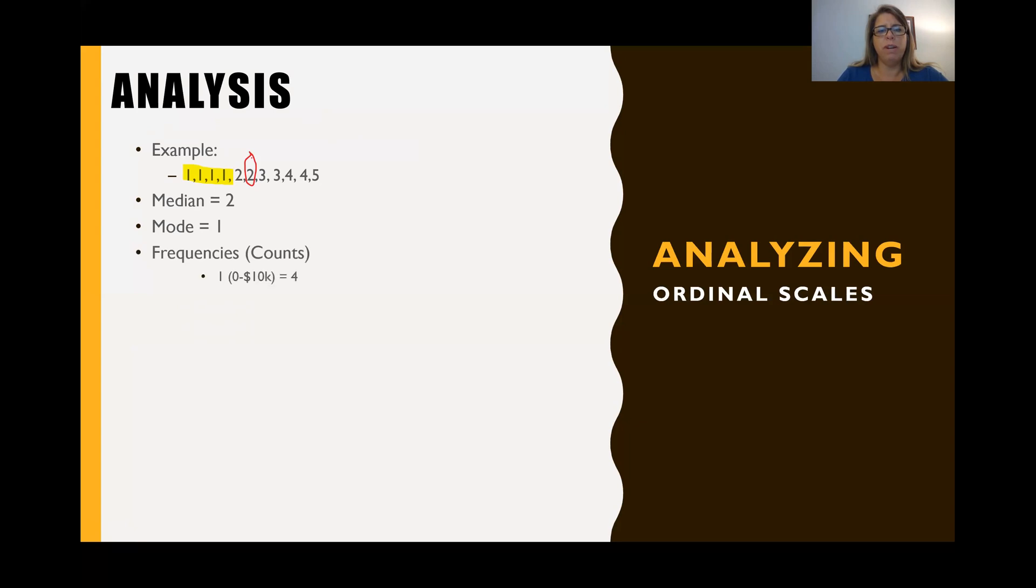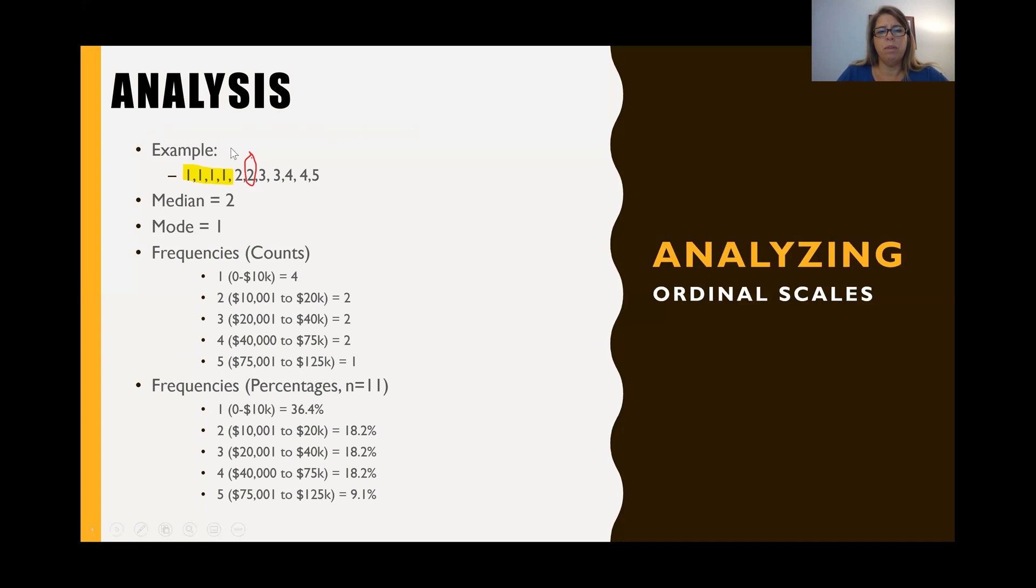So if we do our frequencies, we can count and see which category, how many we have in each category. And then we can turn that into a percentage by dividing the count numbers by 11. And so this is all the analysis that you really need to do for an ordinal variable. Median, mode, and you can do frequencies and counts and percentages. And that's it.